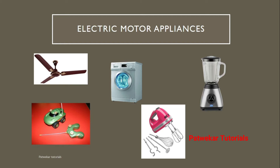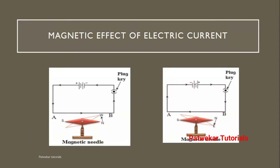Everything rotates — fan rotates, washing machine rotates, mixer rotates. So, all this rotating work is done by the electric motor. Today we are going to look at this electric motor — what is its working? But before that, let us understand what is the magnetic effect of electric current.